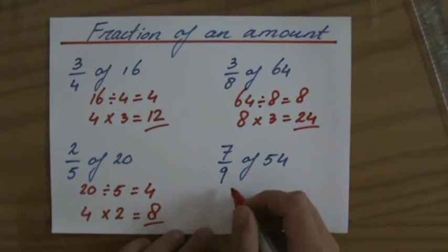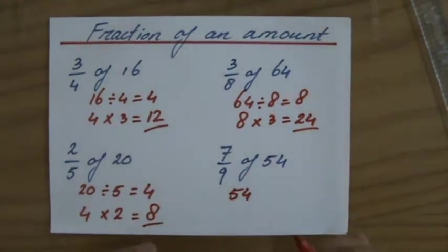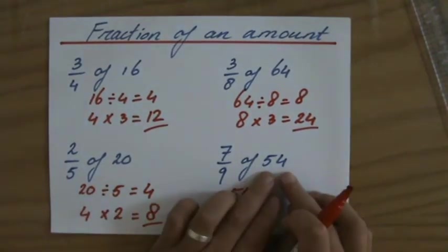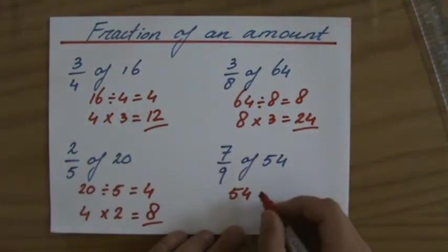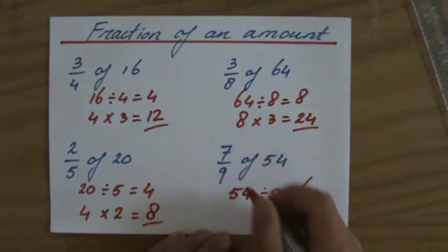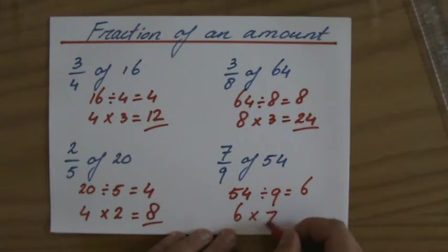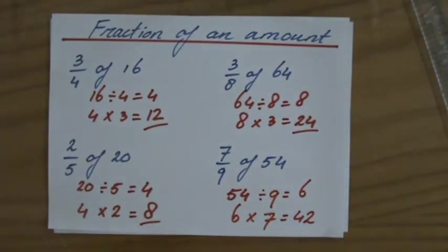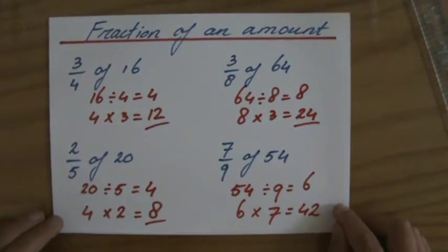So I have 54 kilometers. I run 7/9 of it. So I divide 54 into 9 equal parts. Which is 6. And I run 7 of those parts. So I run 42 kilometers. Which is, by the way, a little bit further than I would actually be able to do.